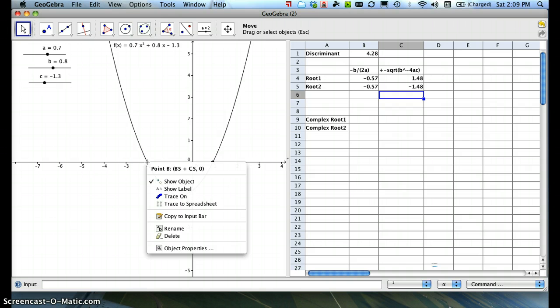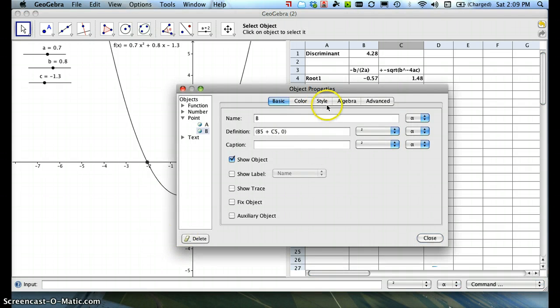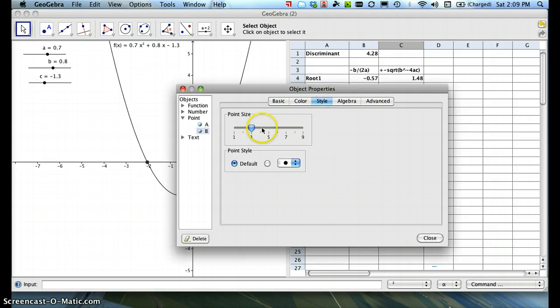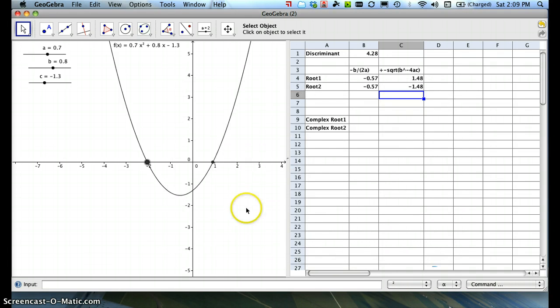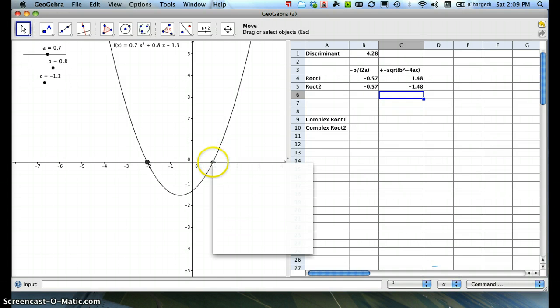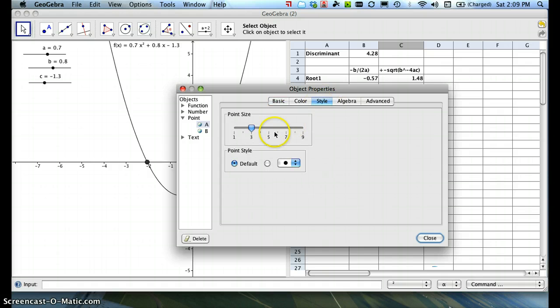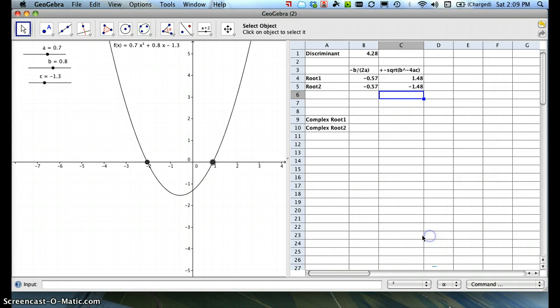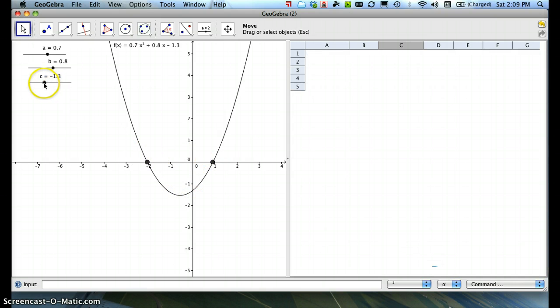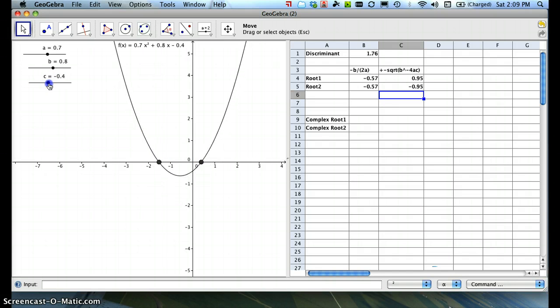If we want, we can change those to make them a little more visible. So I'll go to Object Properties, and if you go to Style, I think it's under here, you can change the point size. So I'll change that to 5, and I'll do the same for this point. So right click, Object Properties, Style, change the point size,